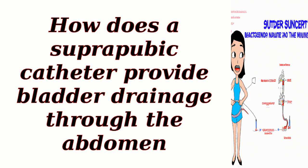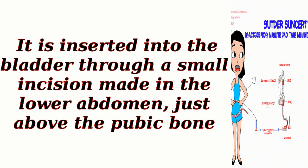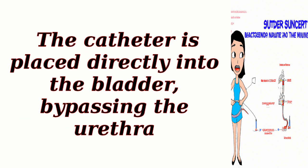A suprapubic catheter is a medical device used to provide bladder drainage through the abdomen. It is inserted into the bladder through a small incision made in the lower abdomen, just above the pubic bone. The catheter is placed directly into the bladder, bypassing the urethra.